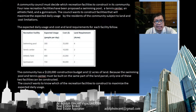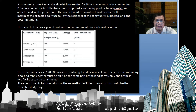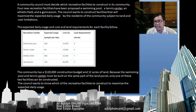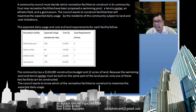So the problem is: a community council must decide which recreation facilities to construct in its community. Four new recreation facilities have been proposed: a swimming pool, a tennis center, an athletic field, and a gymnasium. The council wants to construct facilities that will maximize the expected daily usage by the residents of the community, subject to cost and land limitations.